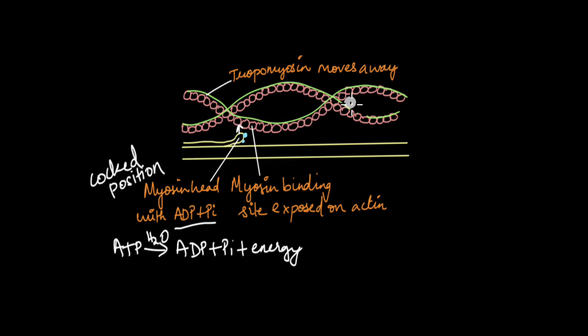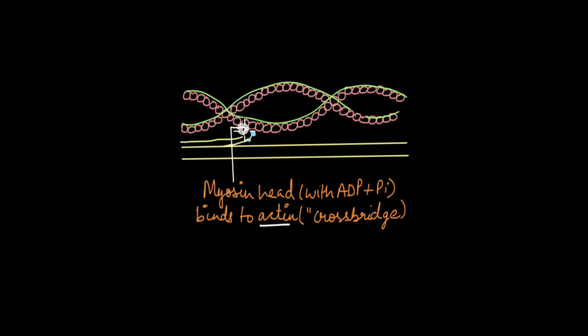So now with the myosin binding sites exposed on actin, myosin head can bind to the actin protein, actin monomer basically. This linking of the myosin head to actin is known as the cross bridge. And this entire process where the cross bridge forms and detaches and forms and detaches is known as the cross bridge cycle.